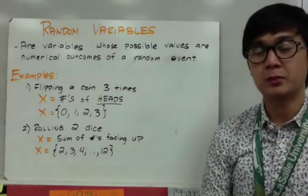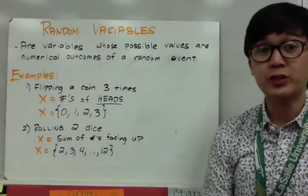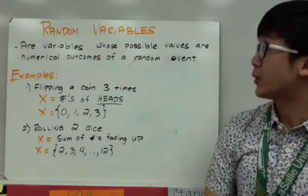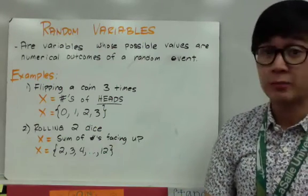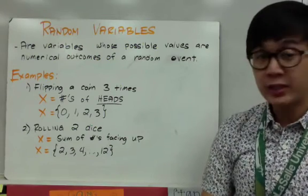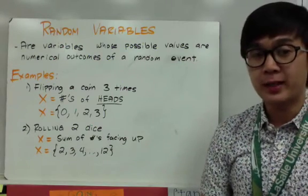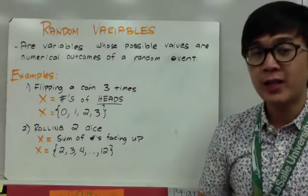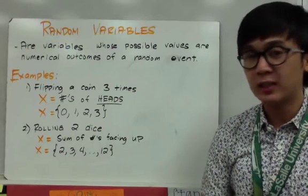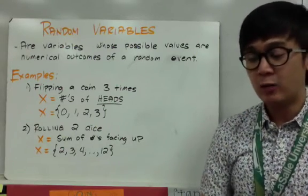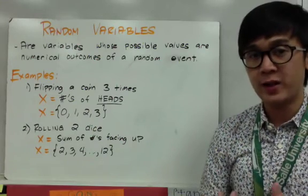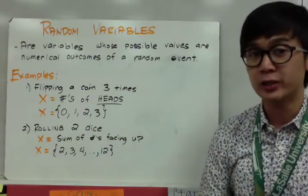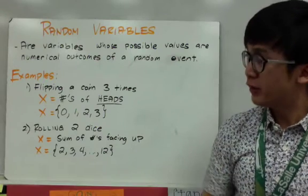Now we're going to be working on random variables. By definition, random variables are just variables whose possible values are numerical outcomes of a random event. The definition might be a little complex, but once we have more examples, you'll understand that random variables are basically numerical values used to denote the possible outcomes or possible combinations in a certain event.